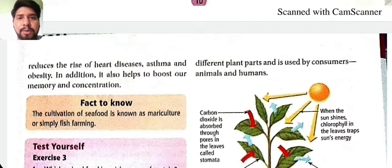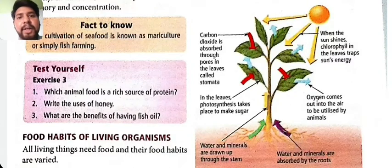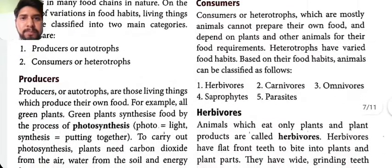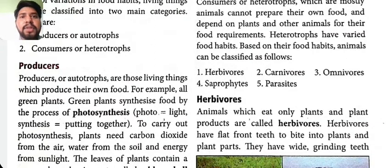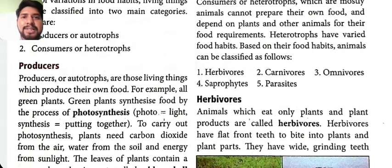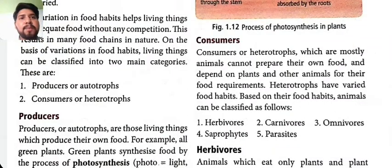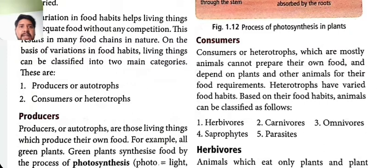All living things need food, and their food habits are different. Based on their food habits, we classify them into two categories: producers and consumers. Producers are those who prepare their own food — for example, green plants. Green plants synthesize food by the process of photosynthesis (photo means light; synthesis means putting things together). Consumers are mostly animals that cannot prepare their own food, and they are sub-classified into five categories.